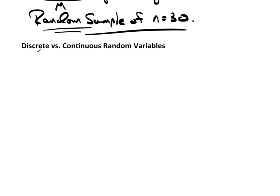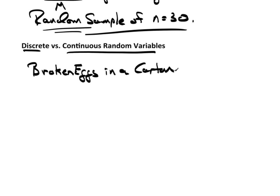Now, discrete versus continuous random variables. We've already talked about the idea of a discrete variable, and this doesn't change. So, I'm going to review this quickly here. Suppose we have, as an example, the number of broken eggs in a carton. So, the variable may simply be broken.